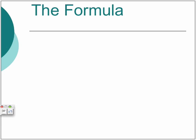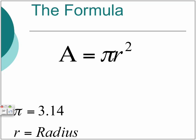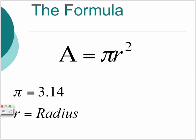The formula to calculate the area of a circle is: area equals pi r squared. This is the pi sign — it's 3.14 — and the r means radius.